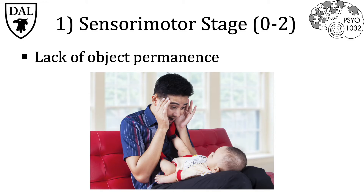One way to judge this is to have an object of interest like a toy in front of an infant and then put a cloth or some other object in front of it. For the first eight to nine months, infants will not understand that the object of interest is still present but just on the other side of the barrier. This might be one of the reasons that playing peek-a-boo with infants is so entertaining.